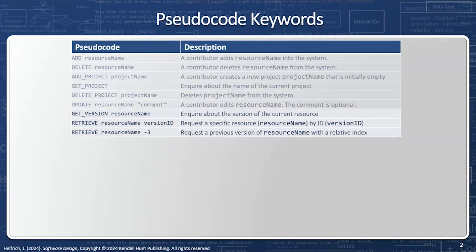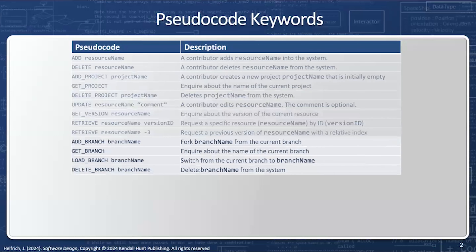You can get the version of a given resource name. You can also retrieve a given ID of a resource, and you can also retrieve two versions, three versions, or four versions earlier of a given resource.